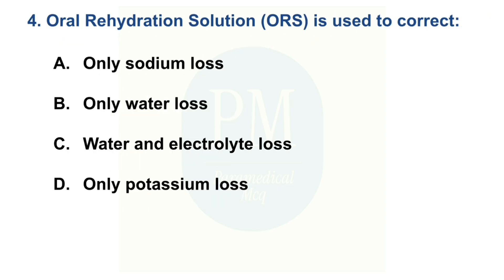Oral rehydration solution (ORS) is used to correct — Option A: only sodium loss. Option B: only water loss. Option C: water and electrolyte loss. Option D: only potassium loss. The correct option is Option C: water and electrolyte loss.